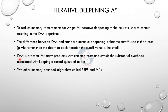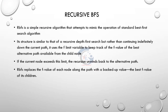In iterative deepening A* search, overhead nodes are reduced. There are two other memory bounded algorithms: Recursive Best First Search (RBFS) and memory bounded A* (MA*). RBFS is a standard best first search algorithm technique that uses additional recursive DFS search, but tries alternative paths when it cannot reach the goal node.